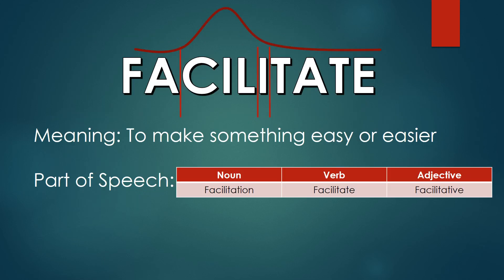As you can see on your screen, the noun form is facilitation, the verb form is facilitate, and the adjective form is facilitative. You can use the endings to help you. For example, '-tion' is a common noun ending and '-ive' is a common adjective ending.